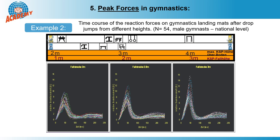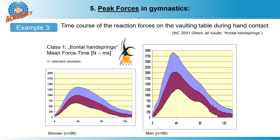We measured the forces that occur at the vault between the hands and the vaulting table for all participants at the first official world championships where the vaulting table was used — this was in Ghent 2001. More recent measurements have confirmed these old values. We have here the force curves for the classic frontal handspring — on the left for women and on the right for men. The upper line of the red area marks the average course, that is, the mean values curve. The red and blue marked areas mark the tube into which plus or minus one standard deviation — approximately 66% of all vaults — fall.